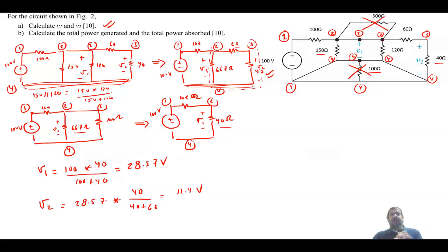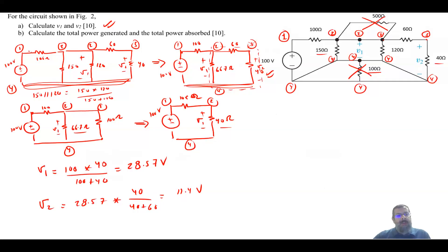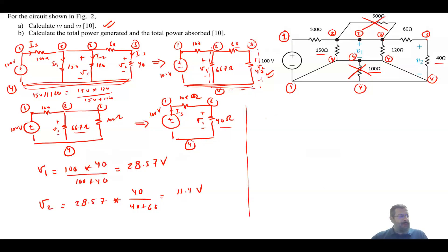Next, you are asked to calculate the total power generated and the total power absorbed. In this circuit there is only one source, so that is the only source to supply; the rest are resistors and will be absorbing power. We have currents IS, I1, I2, and I3. IS is the current through the supply. I can find IS from the last reduced circuit: IS equals 100 volt divided by 100 plus 40, which gives 0.714 amps.